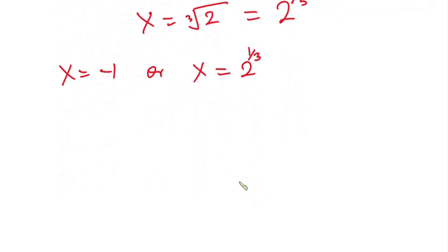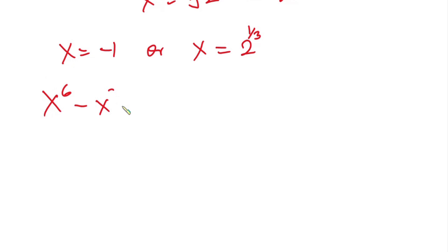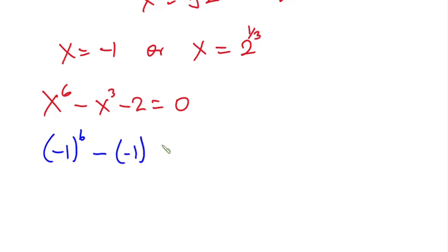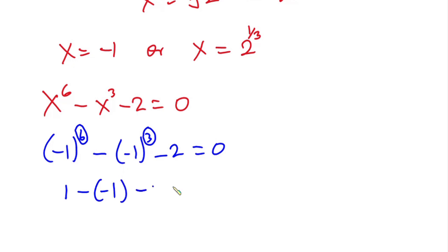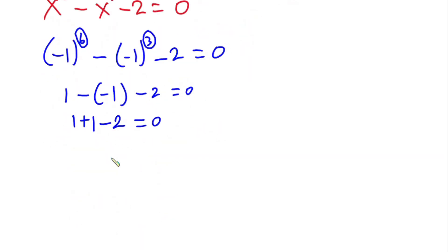Let's verify. The equation is x to the sixth power minus x to the third power minus 2 equals zero. When x equals negative 1: negative 1 to the sixth power minus negative 1 to the third power minus 2. The sixth power is even so that's positive 1; the third power is odd so that's negative 1. We get 1 minus negative 1 minus 2, which is 1 plus 1 minus 2, giving 2 minus 2 equals zero. Confirmed.